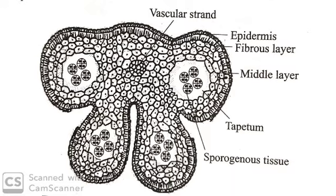In the matured anther, the cells of the epidermis are greatly stretched and flattened. The primary function of the epidermis is protective.